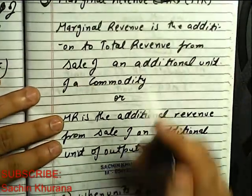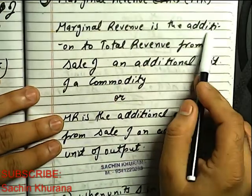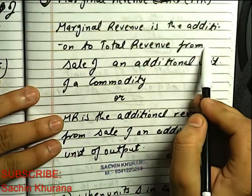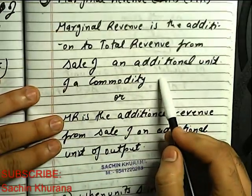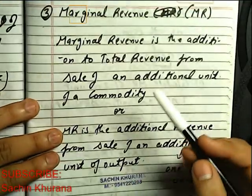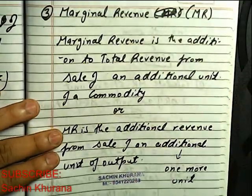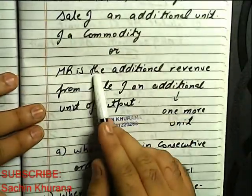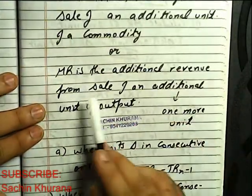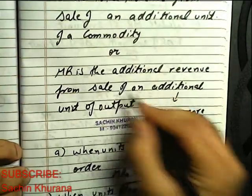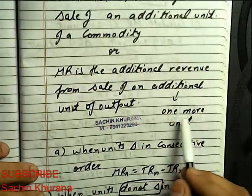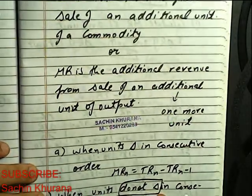Marginal revenue is the addition to total revenue from sale of an additional unit of a commodity. When we have sold one extra unit, then what is the extra revenue we have earned? Or MR is the additional revenue from sale of an additional unit of output. Additional means one more unit.